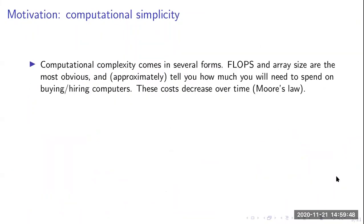This talk is very much focused on striving for computational simplicity. The textbook definition of computational complexity focuses on floating point operations, and you could also think about array size — these matter because they tell you how much you'll need to spend on computers or core time. These costs do decrease over time through Moore's law, where the number of transistors on a device roughly doubles every 18 months, although exploiting those advantages is becoming more and more challenging.